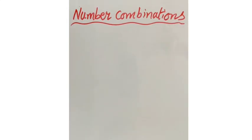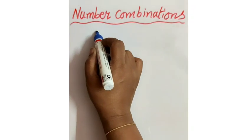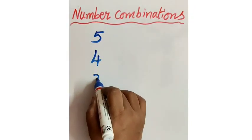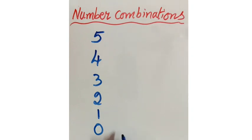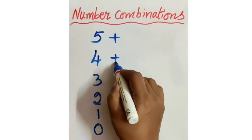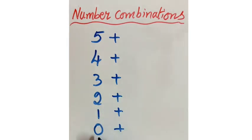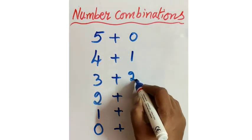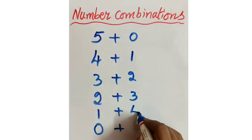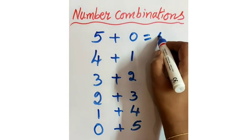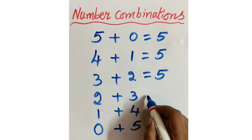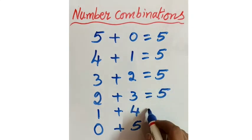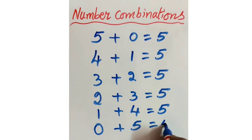Now let us find out combinations of 5. Combinations of 5 — now you can tell easily. Before numbers: 5, 4, 3, 2, 1, 0. And write this in reverse — after numbers: 0, 1, 2, 3, 4, 5. So: 5 plus 0 is 5, 4 plus 1 is 5, 3 plus 2 is also 5, 2 plus 3 is also equal to 5, 1 plus 4 is 5, 0 plus 5 is 5.